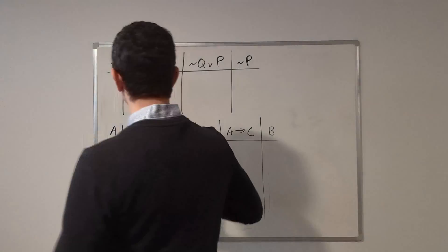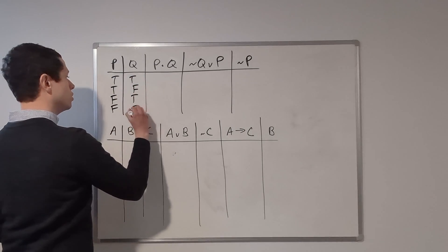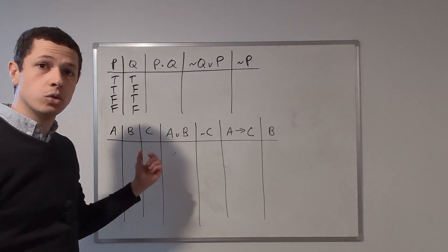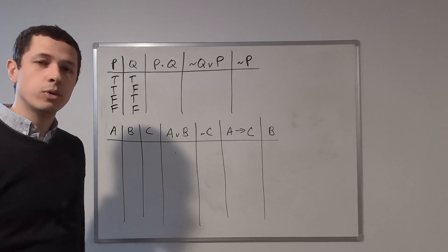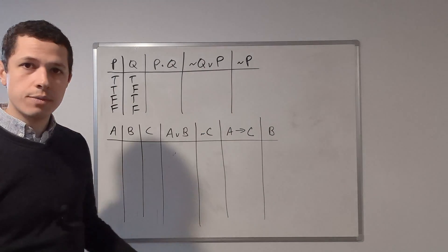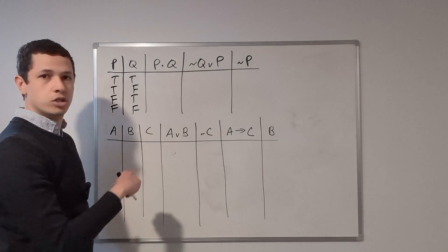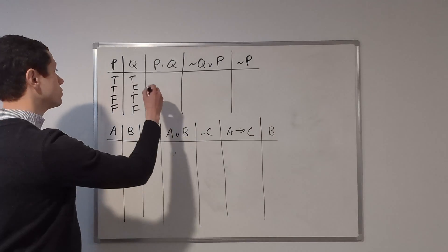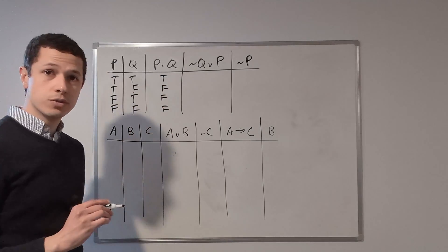Let's get started. I'll fill out the initial truth values: T, T, F, F for p and T, F, T, F for q. If you don't know how to set up a truth table or calculate the logical connectives, I have videos on those topics — I recommend watching those first. All we're going to do here is calculate these statements; the order doesn't matter because, again, it's not an argument. We'll start with the conjunction. A conjunction is true when both conjuncts are true; otherwise it's false. So: T∧T = T, T∧F = F, F∧T = F, F∧F = F.